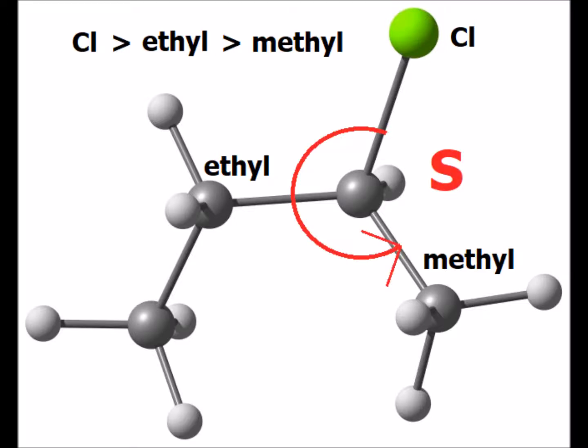Since the progression from the highest to the next highest to the next highest priority takes us counter-clockwise or anti-clockwise, we therefore have the S isomer of 2-chlorobutane.